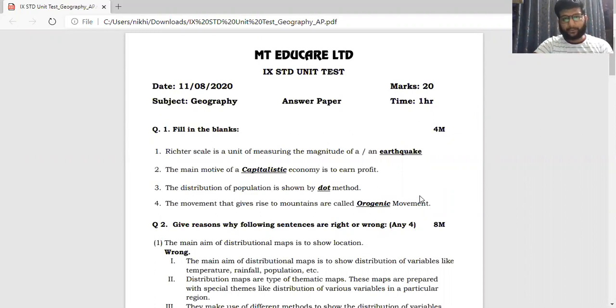So the first question, Richter scale is a unit of measuring the magnitude of an earthquake. The main motive of capitalist economy is to earn profit. Remember when it comes to profit, it is always capitalist. And when it comes to socialist economy, it is always the social welfare of the people. Third, the distribution of population is shown by dot method. The movement that gives rise to the mountains are called orogenic movement.